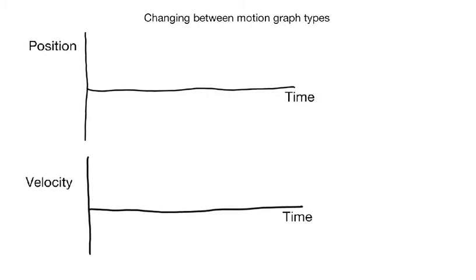Hello everyone. In this video we're going to look at different types of motion graphs and how to change in between them, specifically the position versus time graphs and the velocity versus time graphs. In the position versus time graphs we have on the y-axis the position or location of the object. On the velocity graphs we have velocity, which can be positive or negative — so we're looking at velocity in two different directions.